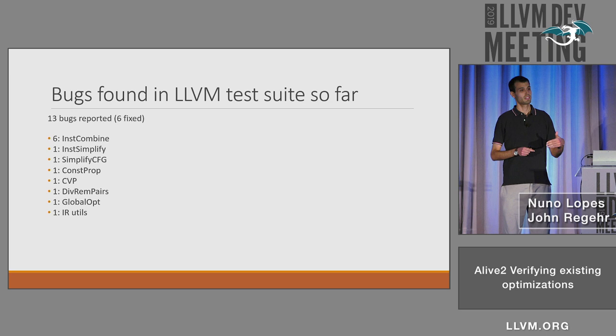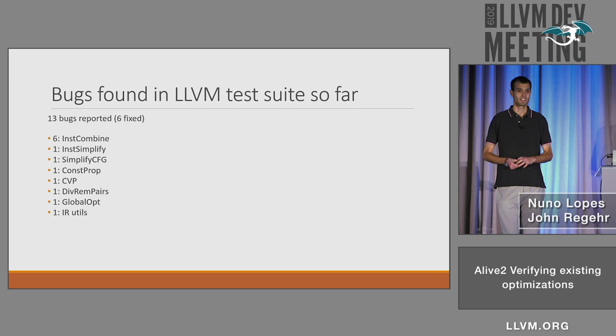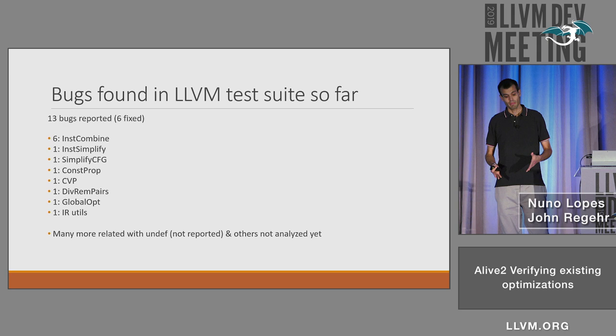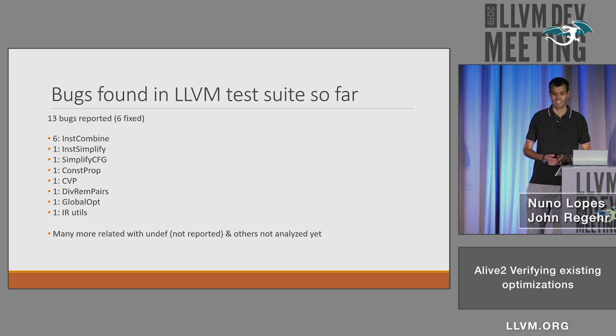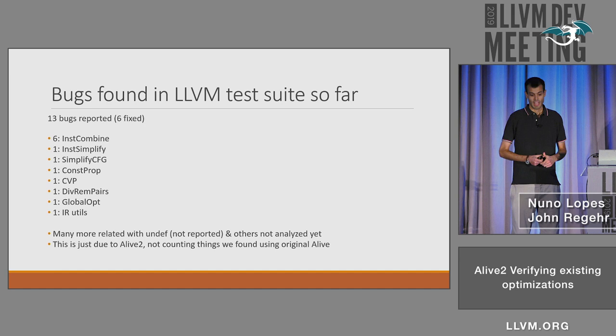The interesting thing is these bugs were found in unit test cases where people were actually checking that the output of the optimizer was wrong. So this is not just random code — these were unit tests. There are many more that Alive is complaining about, but they're related to undef, and they would become correct if undef died. Since undef is dying soon, we're not reporting those right now.